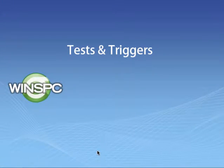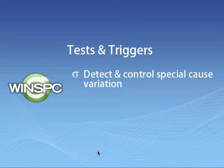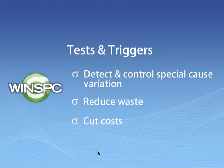Control test templates, tests, and triggers are the foundation of real-time SPC. Fully used, they can optimize the detection and control of special cause variation and, in many cases, return millions of dollars to a manufacturer's bottom line as a result. Thank you very much.